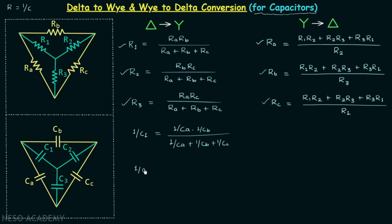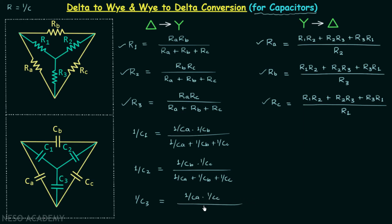Similarly, 1 over C3 will be equal to (1 over CA multiplied by 1 over CC) divided by (1 over CA plus 1 over CB plus 1 over CC). This is the set of formulas which we need to convert the delta network of capacitors to the Y network of capacitors, and you now know how to write down these formulas.